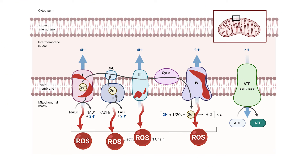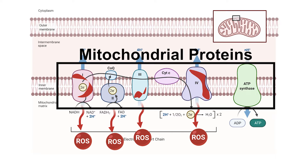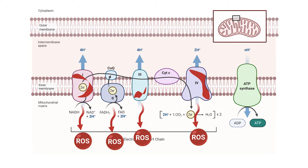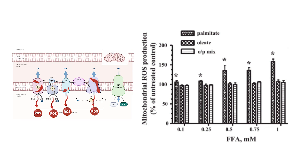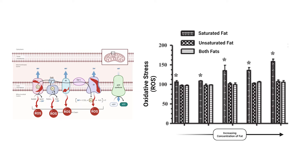Let's look at one more measure of mitochondrial function: oxidative stress, which is measured as reactive oxygen species. This is an indication of overall stress on the cell, because reactive oxygen species — abbreviated ROS — are molecules that are considered unstable and they tear away at other molecules in the cell, causing damage if overabundant. So the more ROS, typically the worse off the cell is. Again, we have our palmitate saturated fat, our oleate unsaturated fat, and our mixture. Yet again, there's only an increase in ROS when palmitate is added alone.